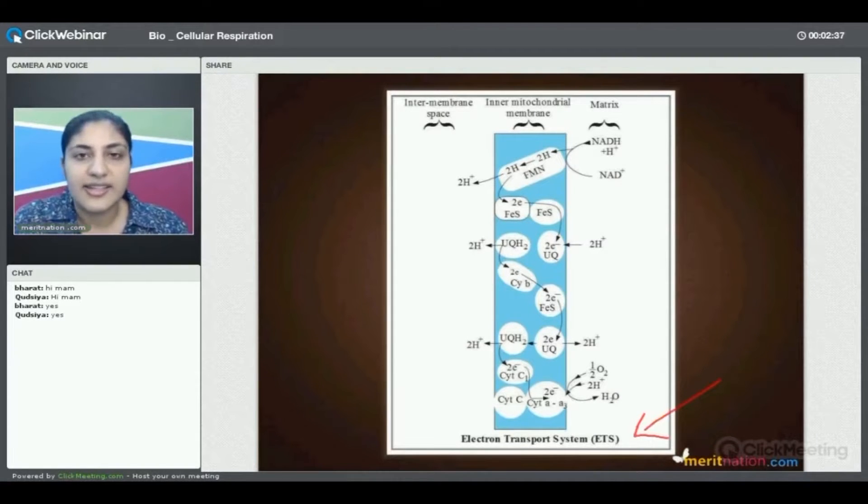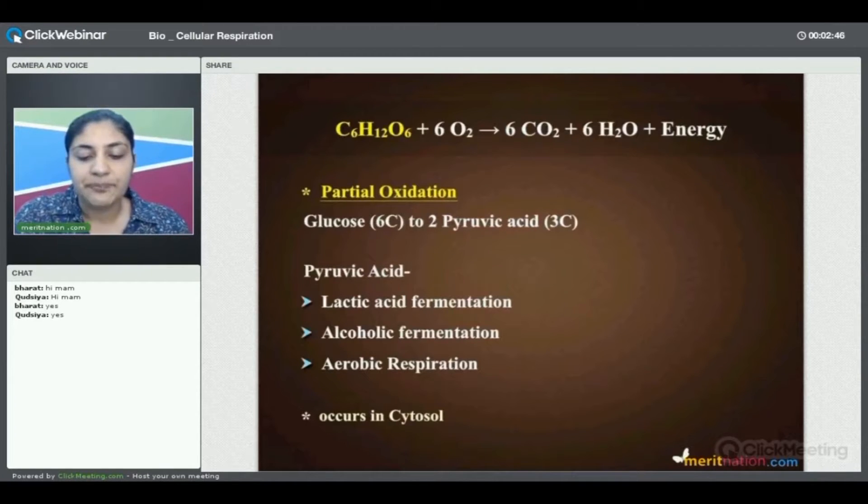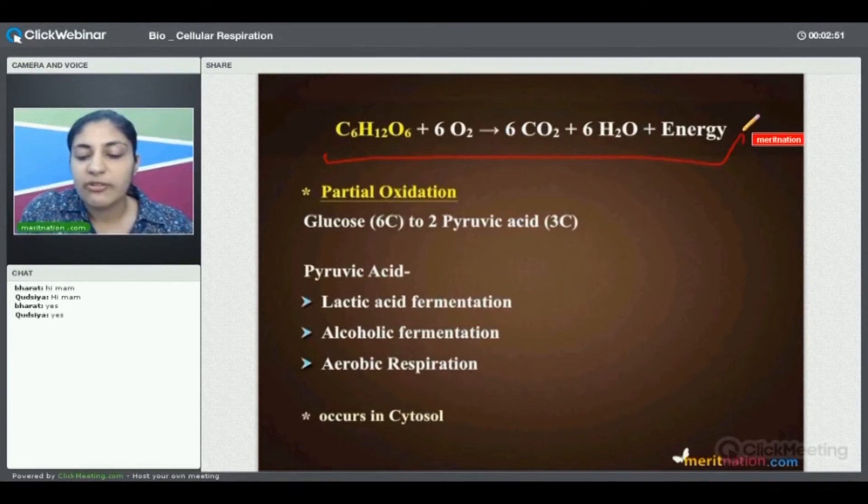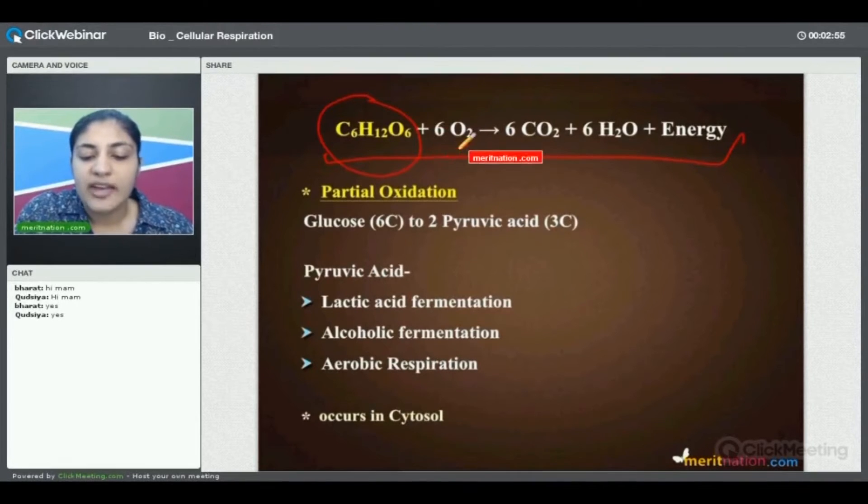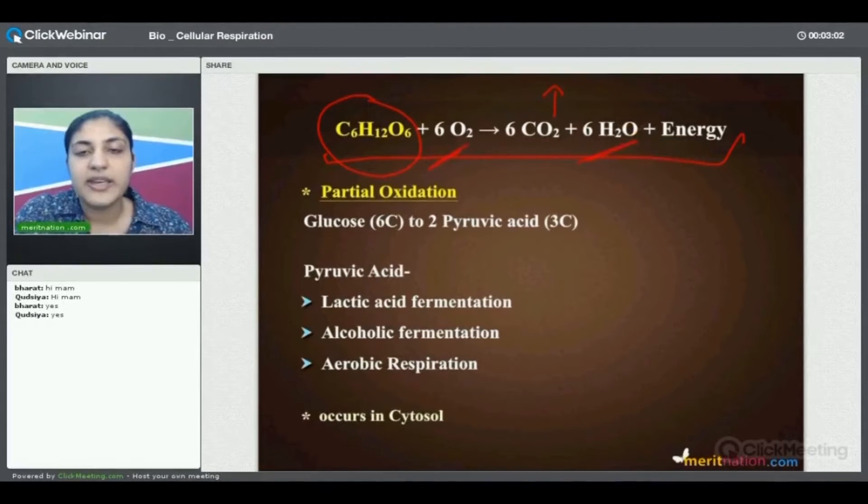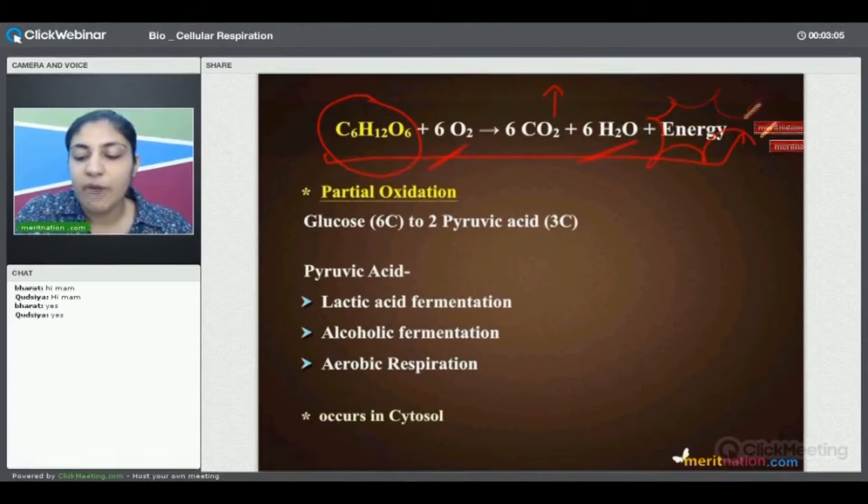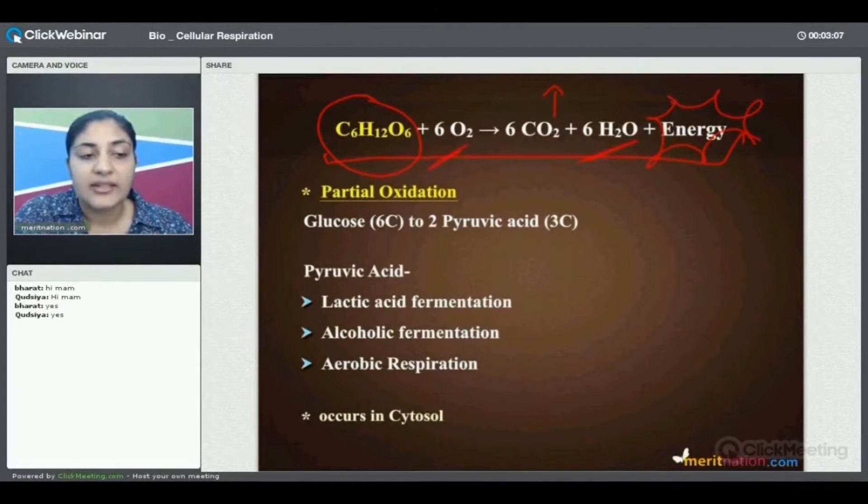Before we begin with electron transport chain, let us have a quick overview of what we have already studied. So in cellular respiration, as you know, this is the equation of respiration. We have a molecule of glucose and oxygen, and when they combine we have carbon dioxide being released, we have water molecules being released, and we have energy formed in this process.